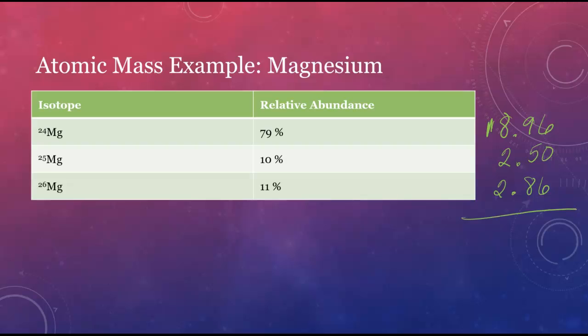Adding those values all together, we get 24.32. That's pretty much the atomic mass that's printed on periodic tables.